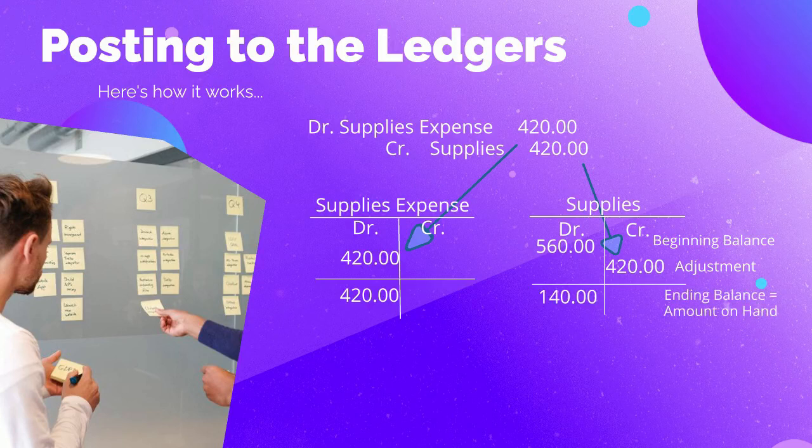Look at the supplies account. Your beginning balance was $560. We posted a credit of $420. The difference between $560 and $420 is $140. We write our answer on the left-hand side because $560 is larger than $420. Remember, supplies is an asset, and the normal balance of an asset is a debit because that makes the account increase. And this is where we would expect to see our balance.